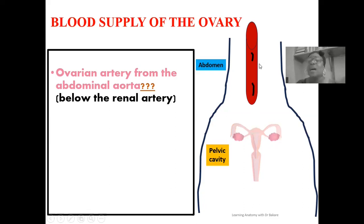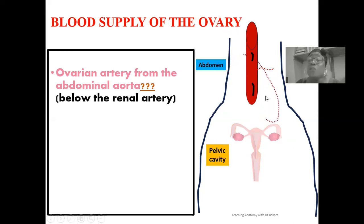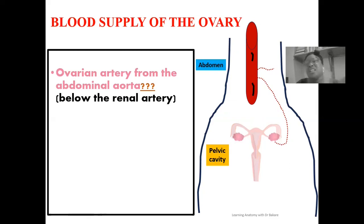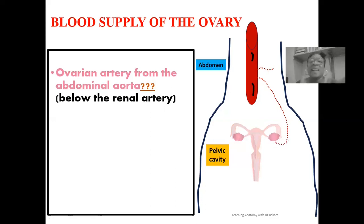On the lateral side of the abdominal aorta, on both the right and left sides, we have the emergence of the renal artery, highlighted in dotted red, directed to supply the kidney. Inferior to the renal artery, we have the emergence of the ovarian artery, also highlighted here in dotted red. As the ovarian artery emerges on the lateral side of the abdominal aorta, you see it descending down to the pelvis, where it supplies the ovary with oxygen and nutrients. Since we have two ovaries — a right and a left — the ovarian artery emerges below the renal artery on the lateral wall of the abdominal aorta.